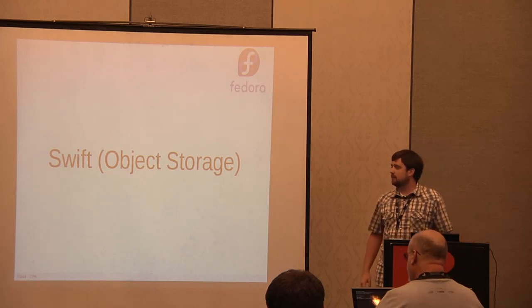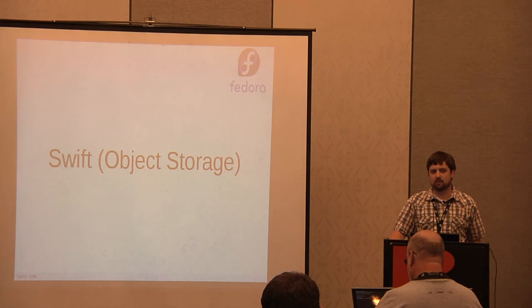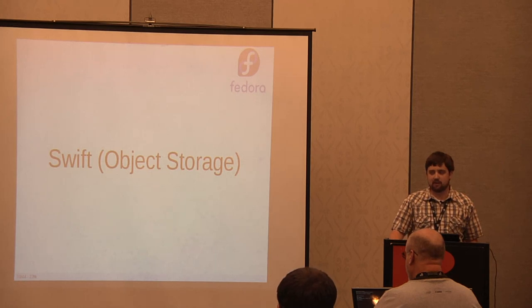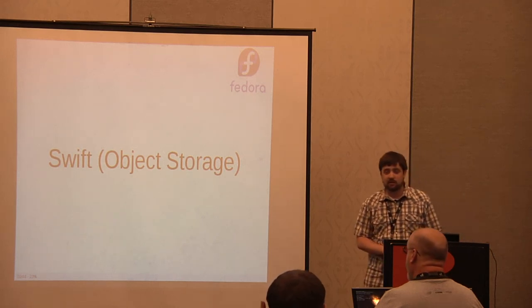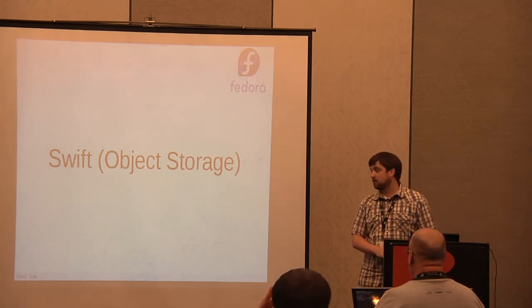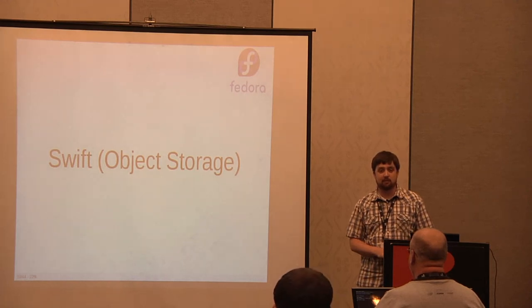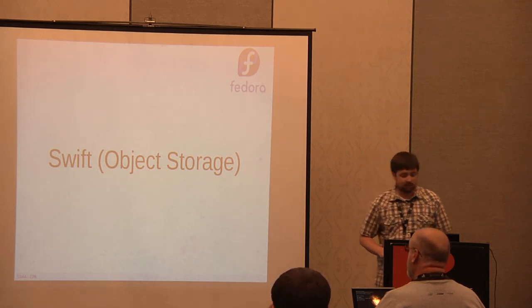Swift is the next piece. It's analogous to Amazon's S3 service — it is object storage. There's a native Swift API, but it also offers Amazon S3 API compatibility. Rackspace Cloud Files uses Swift. Another example user of Swift is Wikipedia — Wikipedia's images, or at least the image thumbnails, are served up by Swift.